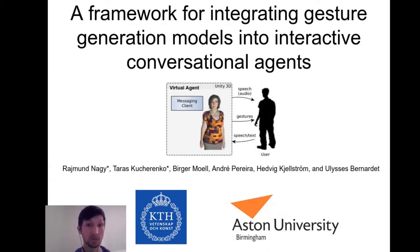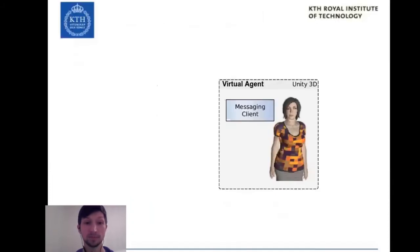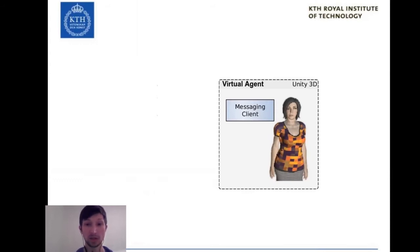We present a proof-of-concept framework intended to facilitate evaluation of modern gesture generation models in an interaction. Our system integrates state-of-the-art gesture generation methods into an interactive embodied agent in Unity for real-time interaction.